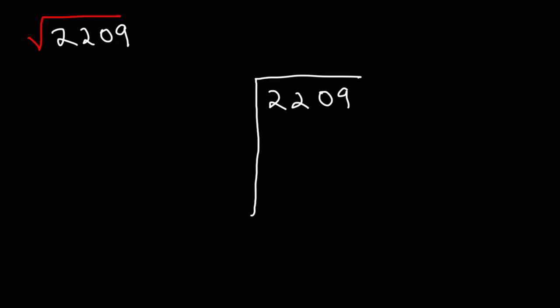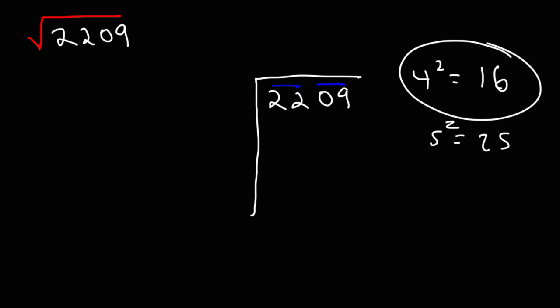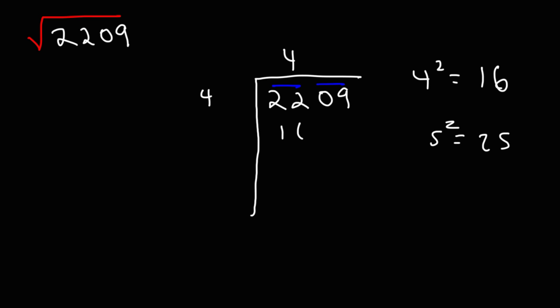The first thing we're going to do is break up the four numbers into pairs of two. Now, let's think of 22. 22 is between the perfect squares 16 and 25. We know that 4 squared is 16 and 5 squared is 25. But we're going to use the perfect square that is less than 22, which is 16. So 4 goes into 22 four times. 4 times 4 is 16. And then we subtract 22 by 16, which gives us 6.